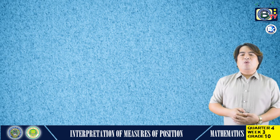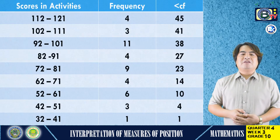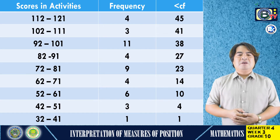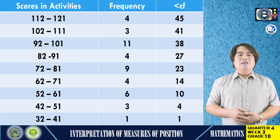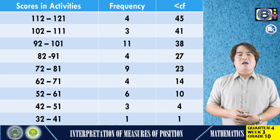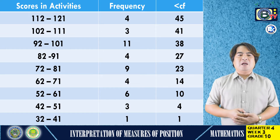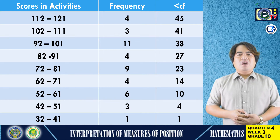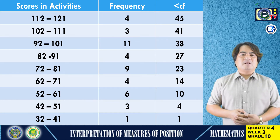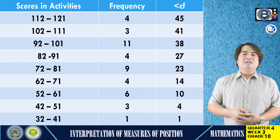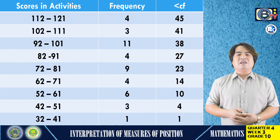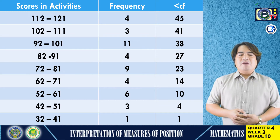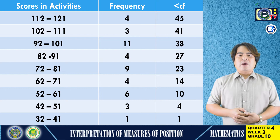Answer the following questions based on the given table. As you can see, the table is composed of three columns: the first column is scores in activities, the second column is the frequency, and the third column is the less than cumulative frequency. From that table, you are now able to answer the questions.